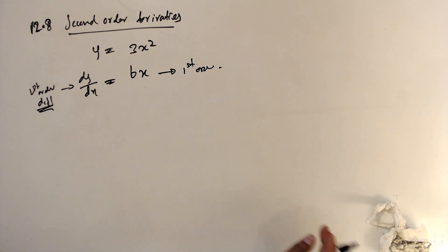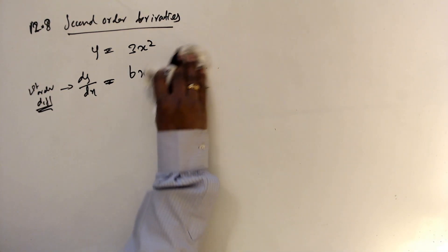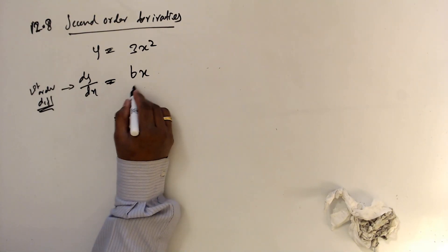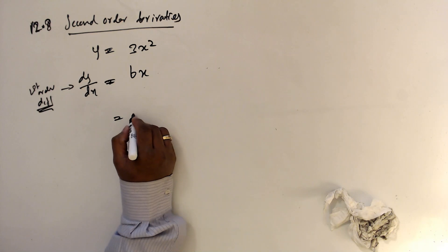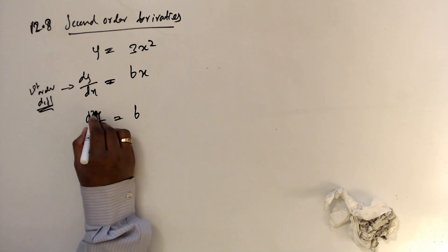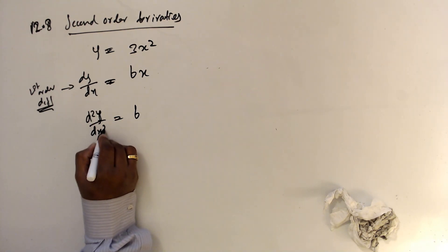And if you differentiate twice this one, what is the answer? When you differentiate 6x becomes 6. So then this is we are writing d squared over dx squared.